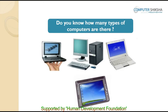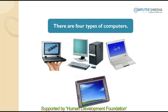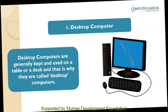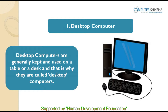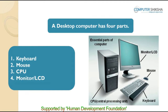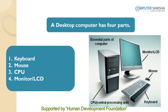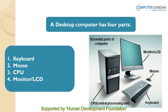Do you know how many types of computers are there? Computers can be of four types. The first type is Desktop Computers. Desktop computers are generally kept and used on a table or a desk, and that is why they are called Desktop Computers. A desktop computer has four parts: keyboard, mouse, CPU, and monitor.